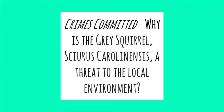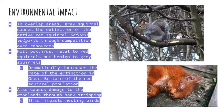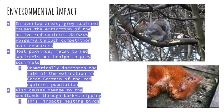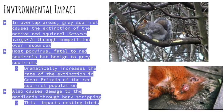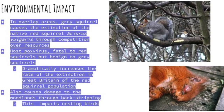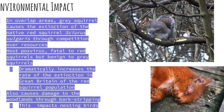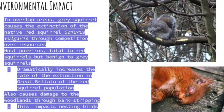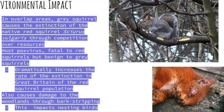Crimes committed: why is the gray squirrel, or Sciurus carolinensis, a threat to the local environment? Environmental impact: in overlap areas, gray squirrels cause the extinction of the native red squirrel, Sciurus vulgaris, through competition over resources. The squirrel pox virus is fatal to red squirrels but benign to gray squirrels, dramatically increasing the rate of extinction of the red squirrel population in Great Britain. Gray squirrels also cause damage to woodlands through bark stripping, which impacts nesting birds.